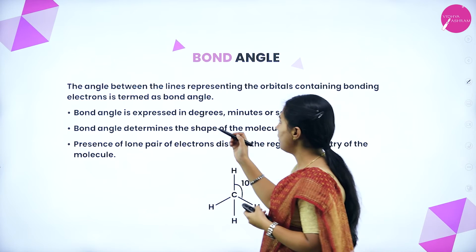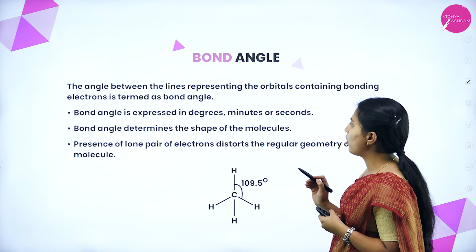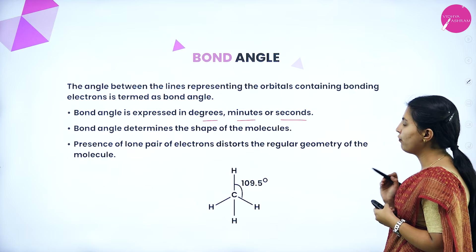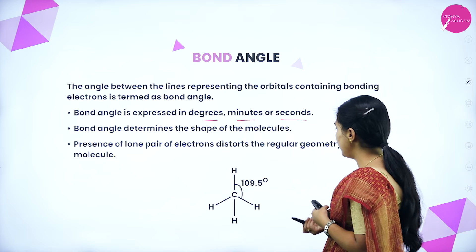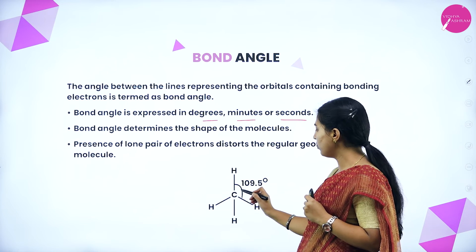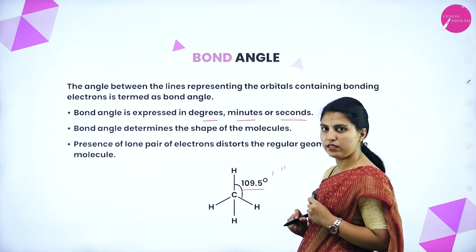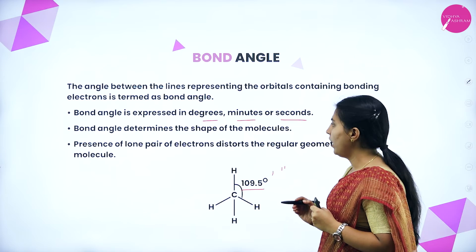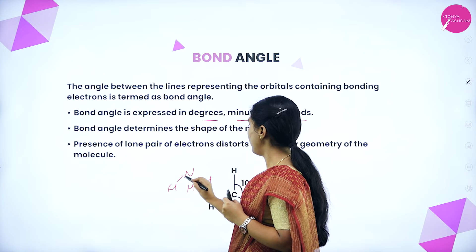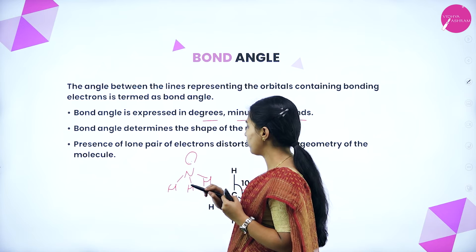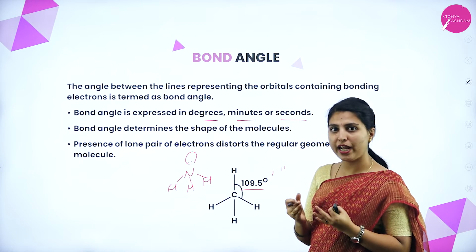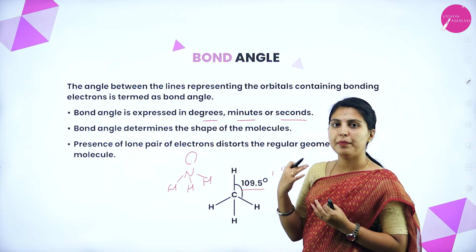Bond angle is the angle between the lines representing orbitals containing bonding electrons, expressed in degrees, minutes, or seconds. Bond angle determines the shape of the molecule. For example in CH₄, the angle between two bonds is the bond angle. Presence of lone pair of electrons distorts the regular geometry of the molecule — as in NH₃, the lone pair pulls upward and distorts the shape.